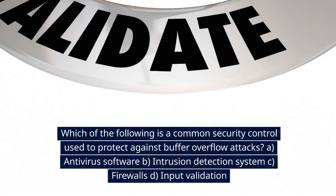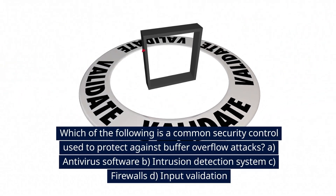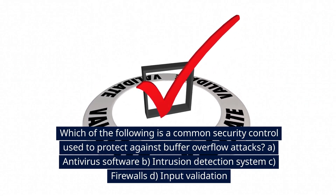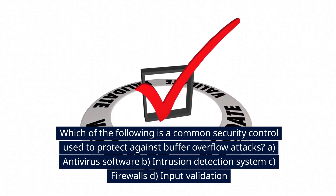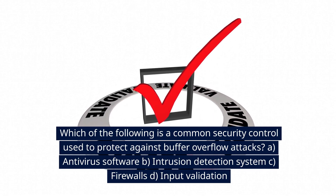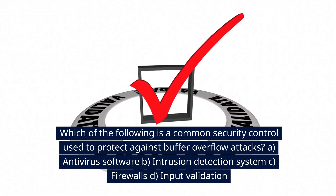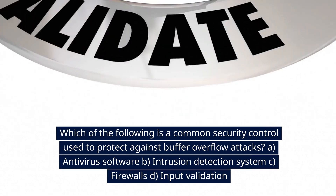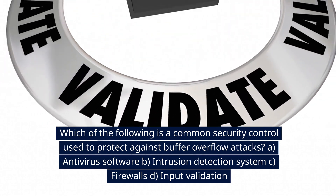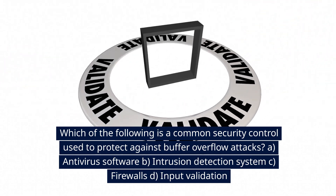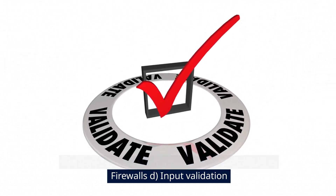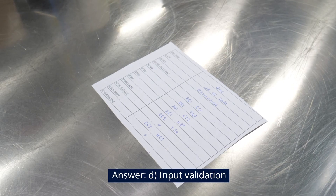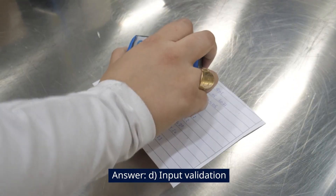Which of the following is a common security control used to protect against buffer overflow attacks? A. Antivirus software. B. Intrusion detection system. C. Firewalls. D. Input validation. Answer: D. Input validation.